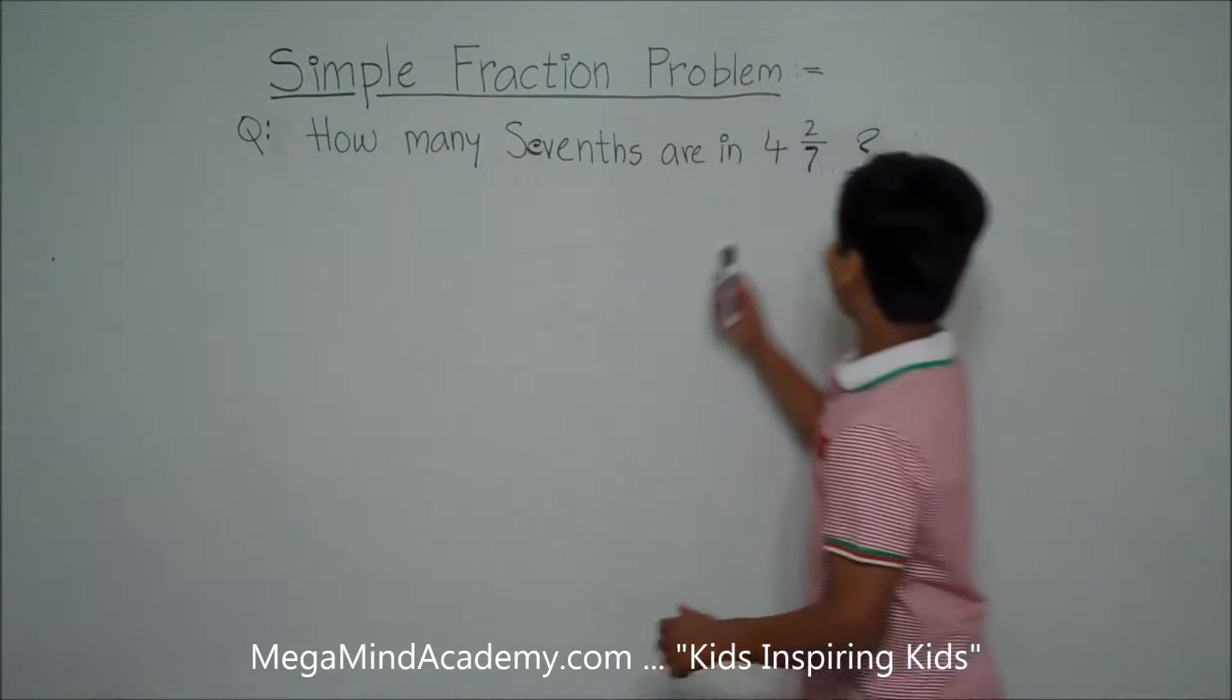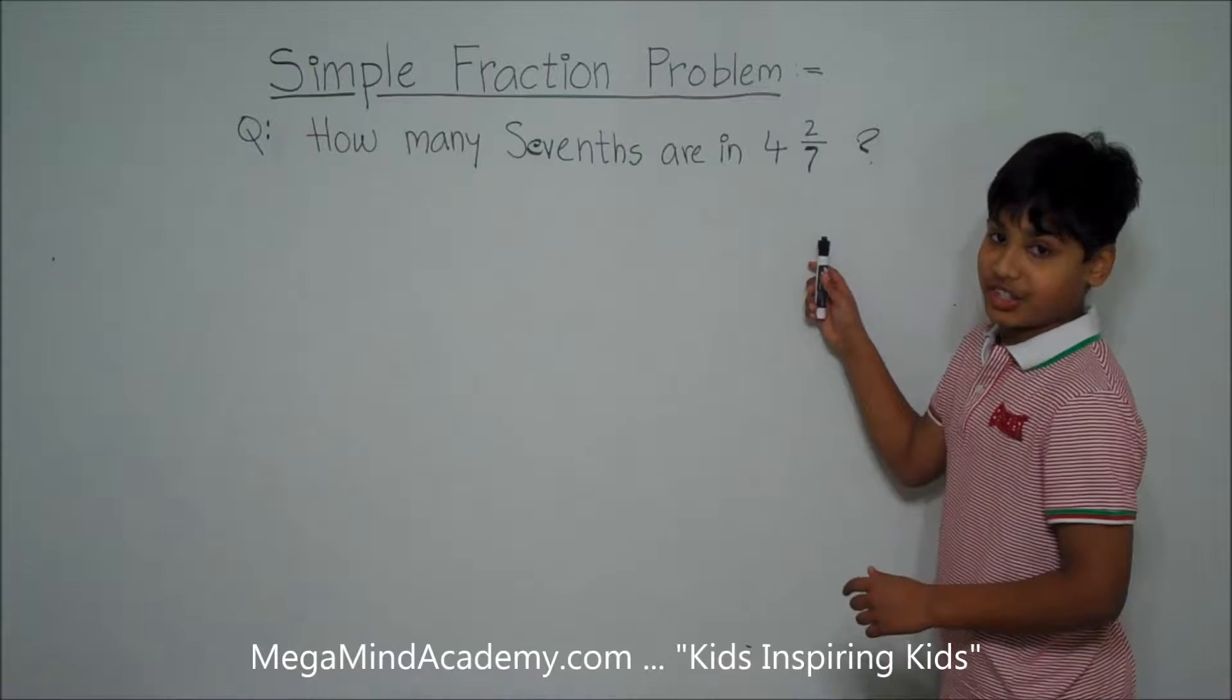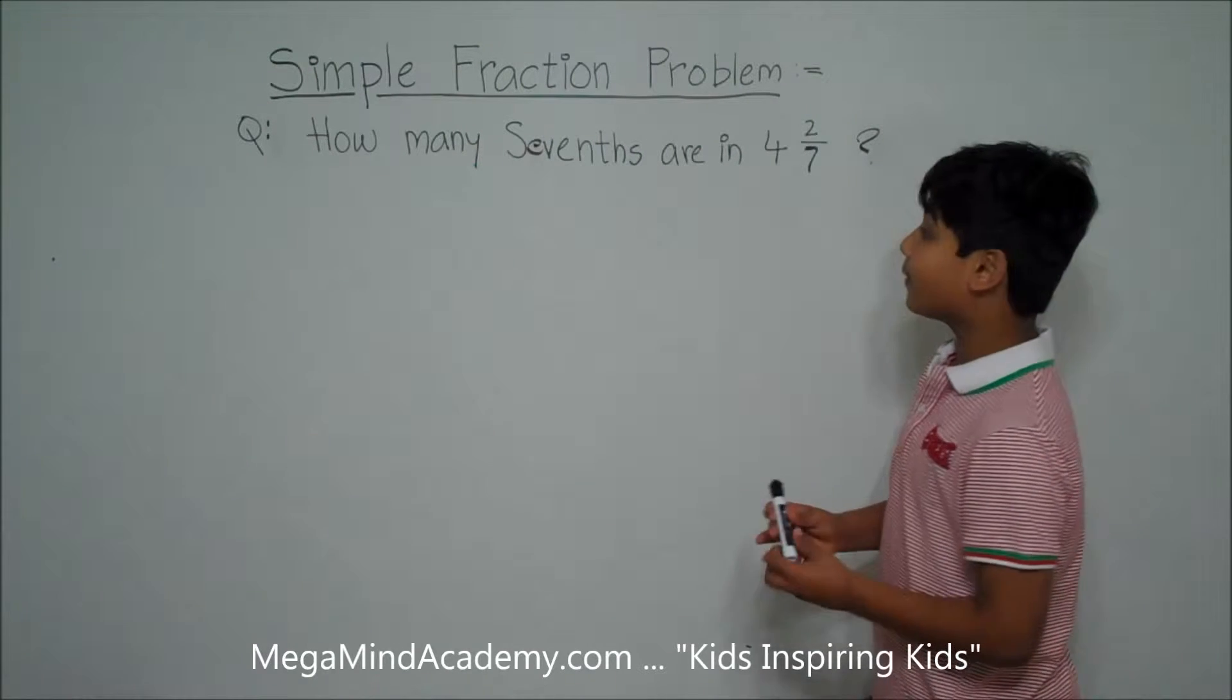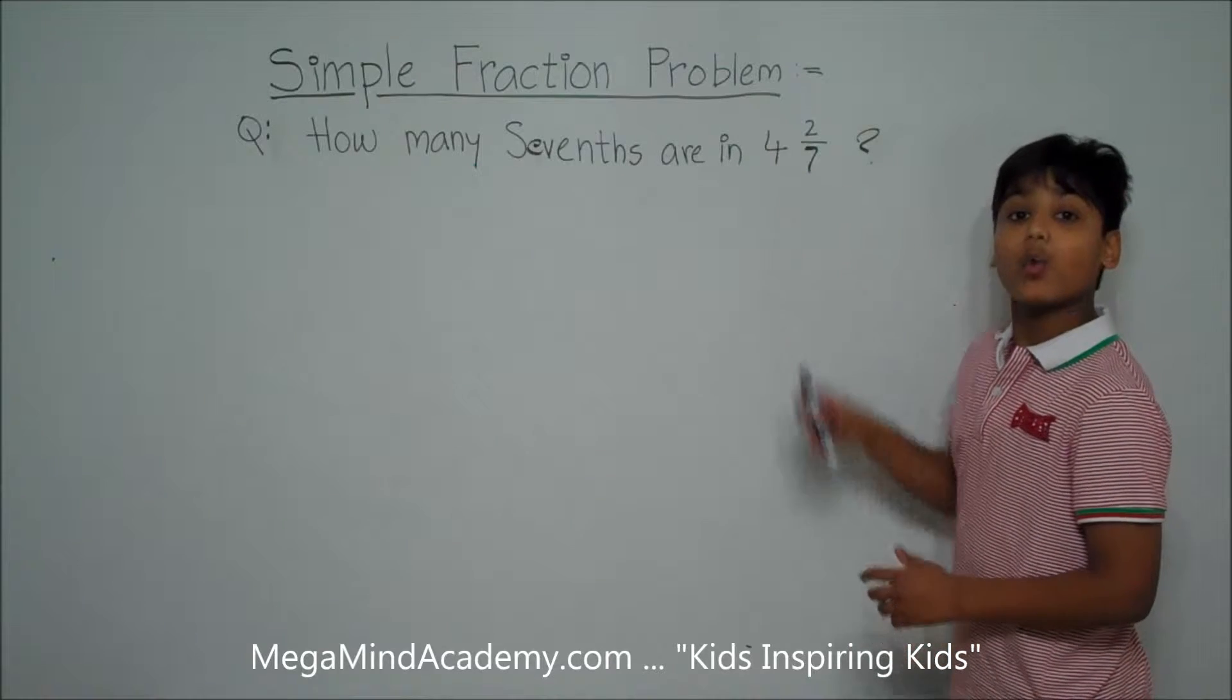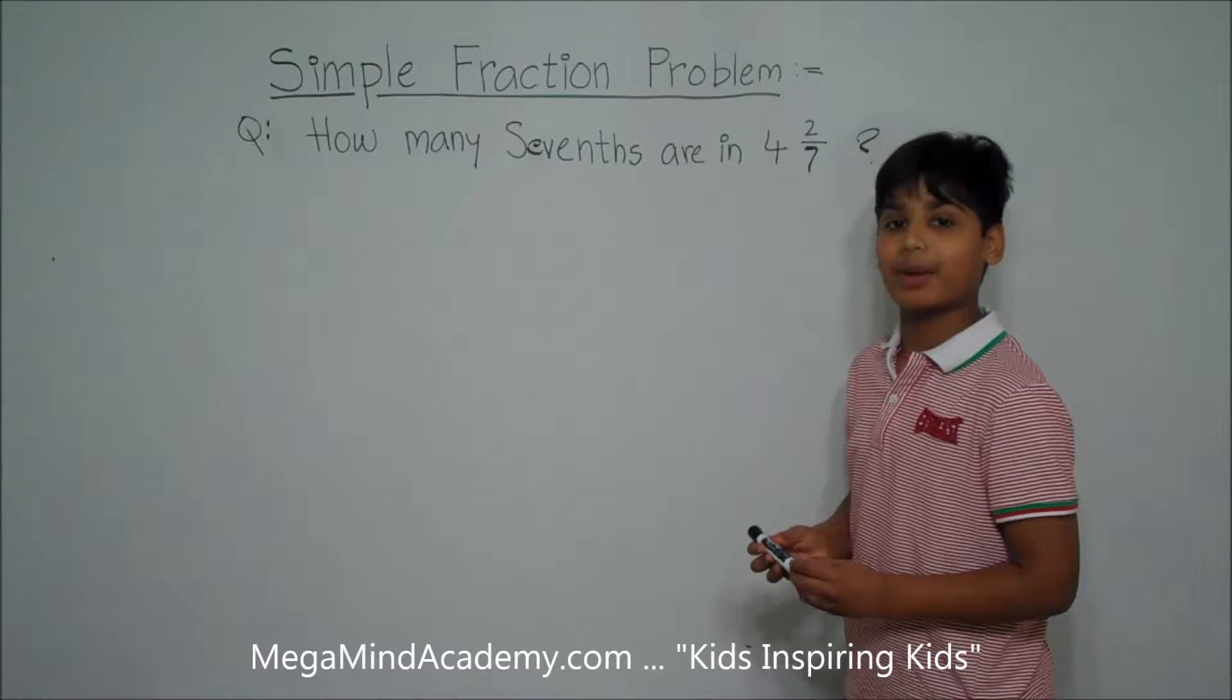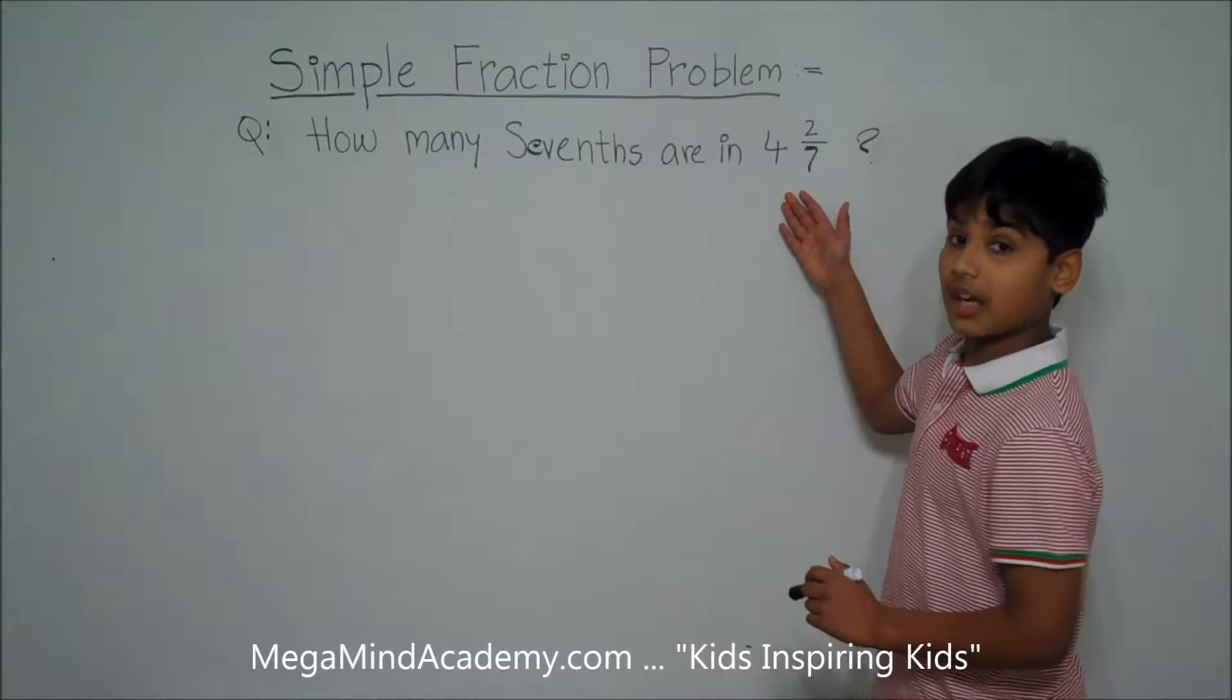Now we know that 4 and 2 sevenths is a mixed fraction. And the way we find out how many sevenths are in 4 and 2 sevenths, we have to convert it into an improper fraction. So let's write down 4 and 2 sevenths.